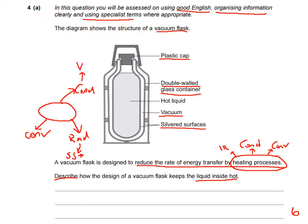Just saying 'it has a vacuum' won't get marks — you need to explain how it stops conduction and convection. The plastic cap sits between the hot liquid and the outside, acting as a barrier; since conduction only takes place in a solid, this is probably about convection. The double-walled glass container is made of glass, not metal — mention why glass was chosen over metal, and why it's double-walled. If you explain all those processes correctly and in detail you should get six marks, but not many students did.